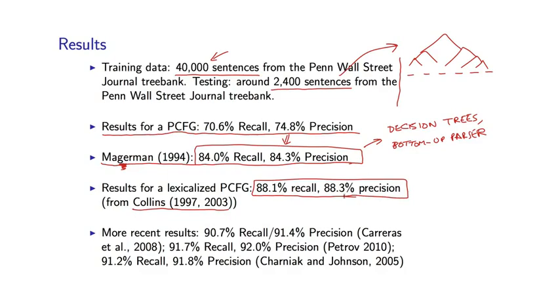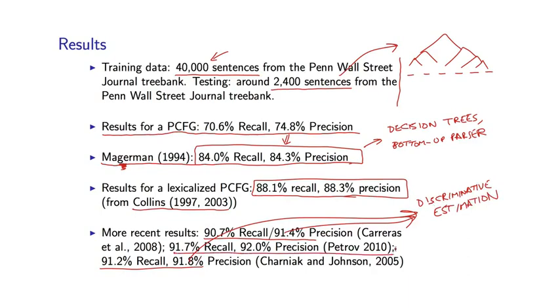There are more recent results which have pushed performance further up into maybe the 91%, 92% range. I've listed a few different cases here. These two methods make use of discriminative estimation methods. And we'll see some of these methods later in the course when we see log linear models and conditional random fields and so on. And Petrov's method makes use of what are called latent variable PCFGs. But in both cases, there are close connections to lexicalized PCFGs or certainly to PCFGs in this latter case.